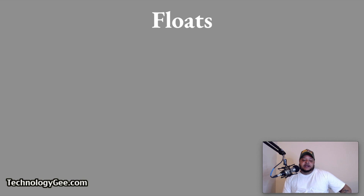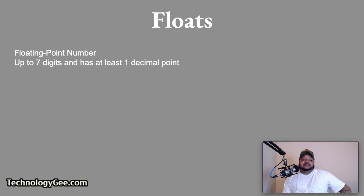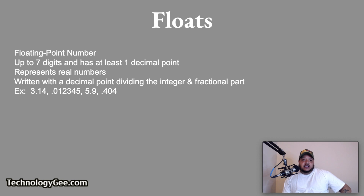Next, we're going to talk about floats. A float, also known as a floating point number, is a number that contains up to seven digits and has at least one decimal point. A float represents real numbers and is written with a decimal point dividing the integer and fractional parts. Here are some examples of floats: 3.14, which equals pi; 5.9; and 0.404. These are floating point numbers, ladies and gentlemen.